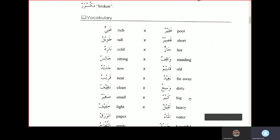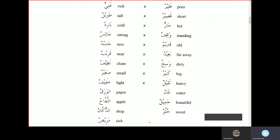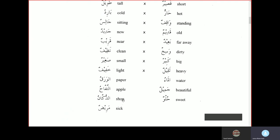Now let's read the vocabulary. Ghaniyun means rich, fakheerun means poor, tavilun means tall, kasirun means short, baridun means cold, harun means hot, jalisun is sitting, wakheerun is standing, jadeedun means new, kadeemun means old, kareebun means near, baidun means far away, nazifun means clean, wasikhun means dirty, sagheerun means small, kabeerun means big, khafeefun means light, thakheelun means heavy, al-waraku is paper, al-ma is water, at-tufahu is apple, jamilun means beautiful, hadun means sharp, hulwun means sweet, maridun means sick.